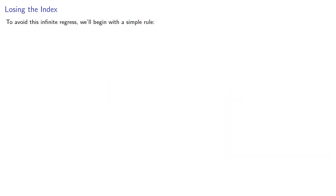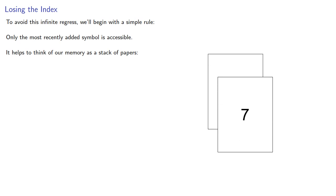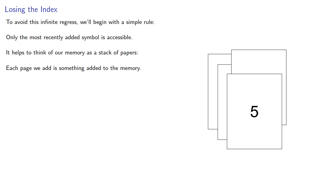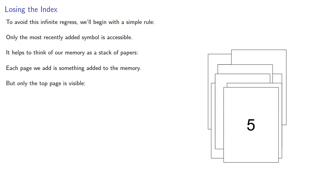To avoid this infinite regress, we'll begin with a simple rule. Only the most recently added symbol is accessible. It helps to think of our memory as a stack of papers. Each page we add is something added to the memory, but only the top page is visible. This is a LIFO, last in, first out model.